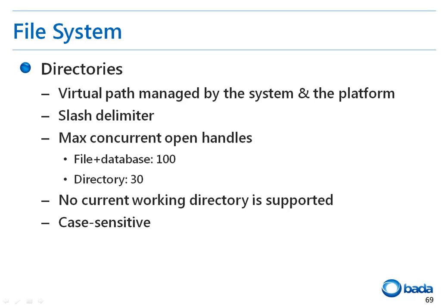First, let's briefly look at the Bada file system. The directory that can be used in Bada is a virtual path managed by the system and platform. In the path, directories are delimited by a slash. The maximum number of files that a Bada application can open is 100, and the maximum number of directories is 30. The current application working directory is not supported. The Bada file system is case sensitive.